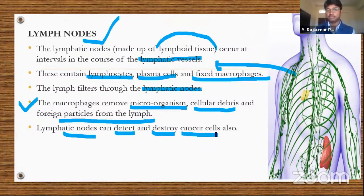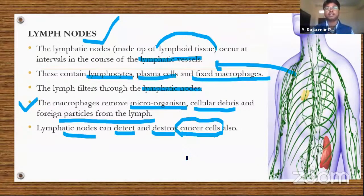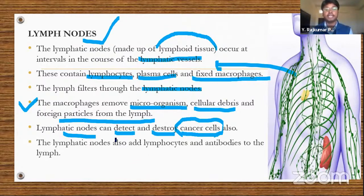Macrophages remove microorganisms, cellular debris, and foreign particles from the lymph, which is why lymph nodes are important for body protection. Lymph nodes can also detect and destroy cancer cells and carcinogenic agents. Cancer is a disease where cell division goes out of control, forming tumors. Lymph nodes can detect these cancer cells and also add lymphocytes and antibodies to the lymph.